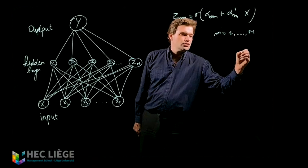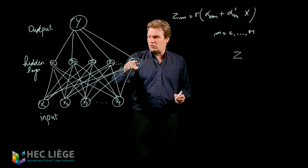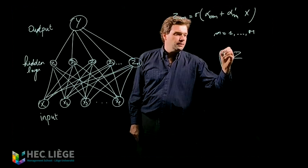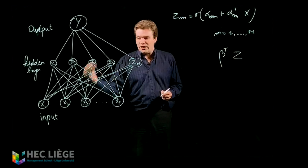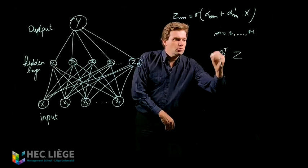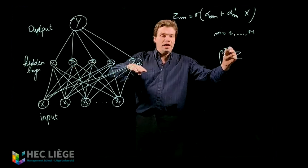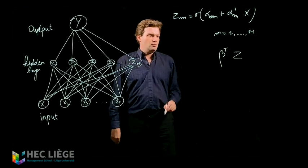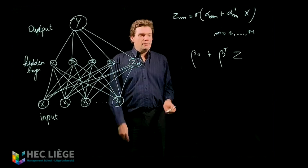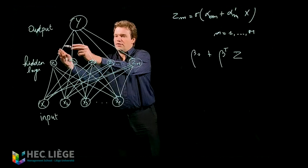When we have zm, we can construct a vector z, corresponding to z1, z2, z3, ..., z_M. We multiply that by β transposed, which is a vector of size capital M. So this gives β1·z1 plus β2·z2 plus β3·z3 plus ... plus β_M·z_M. We add here as well a constant term, which is also named a bias.